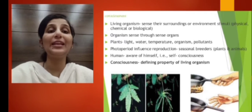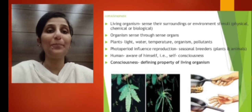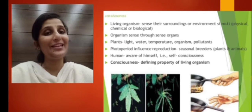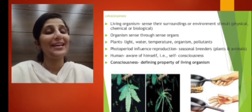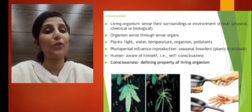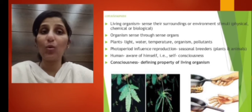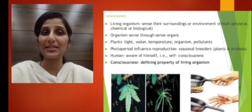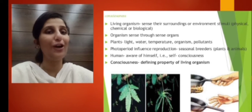The duration of the light period influences reproduction in seasonal breeders. It is important to know that humans are superior to all organisms because only humans have the capacity to be conscious about the self — that means they are self-conscious. So consciousness is a defining property of living organisms. The defining properties of living organisms are metabolism, consciousness, and cellular organization. Cells form tissues, tissues form organs, organs form organ systems, and different organ systems form the organism.